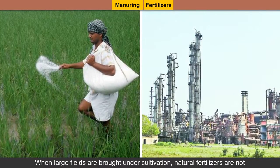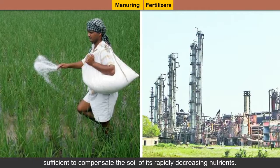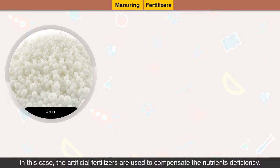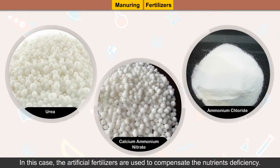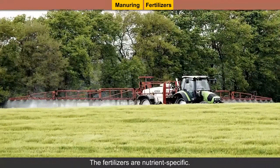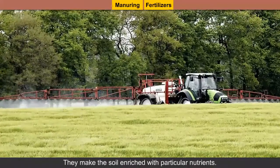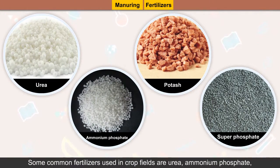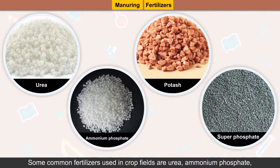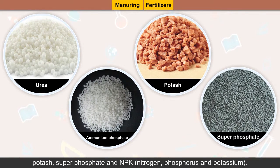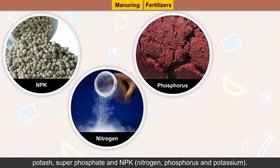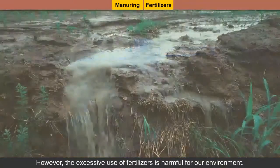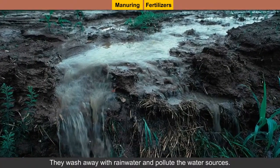When large fields are brought under cultivation, natural fertilizers are not sufficient to compensate the soil of its rapidly decreasing nutrients. In this case, artificial fertilizers are used to compensate the nutrient deficiency. The fertilizers are nutrient-specific and make the soil enriched with particular nutrients. Some common fertilizers used in crop fields are urea, ammonium phosphate, potash, superphosphate and NPK (nitrogen, phosphorus and potassium). However, the excessive use of fertilizer is harmful for our environment. They wash away with rainwater and pollute the water sources.